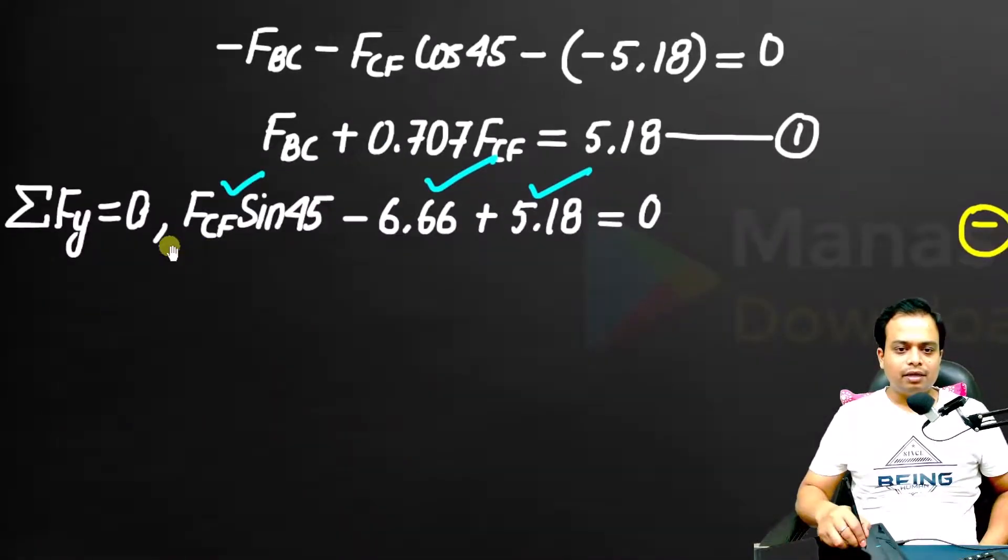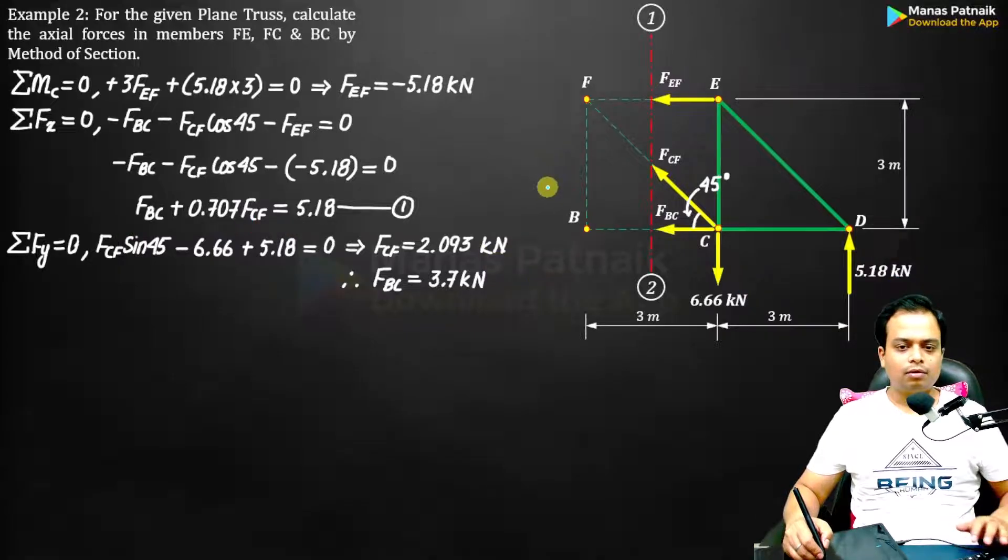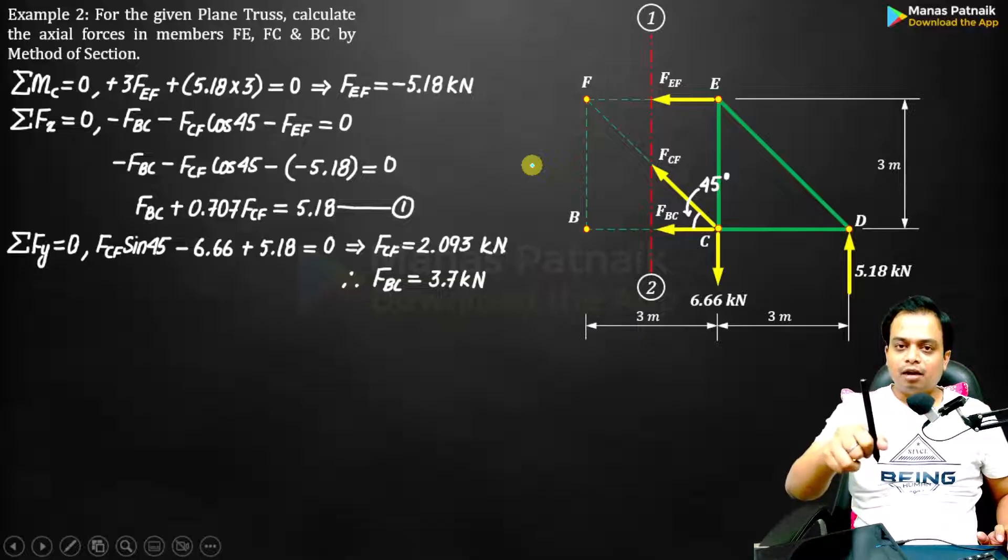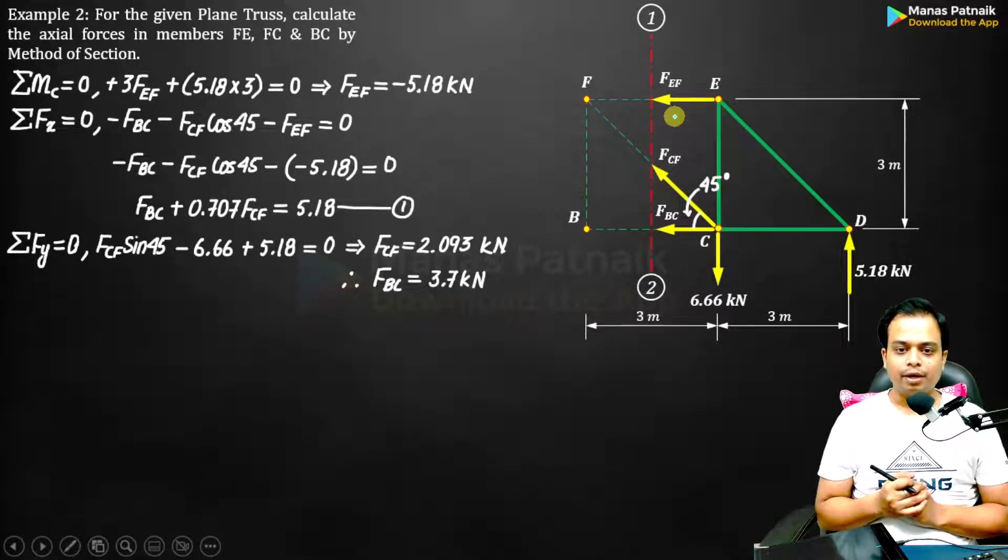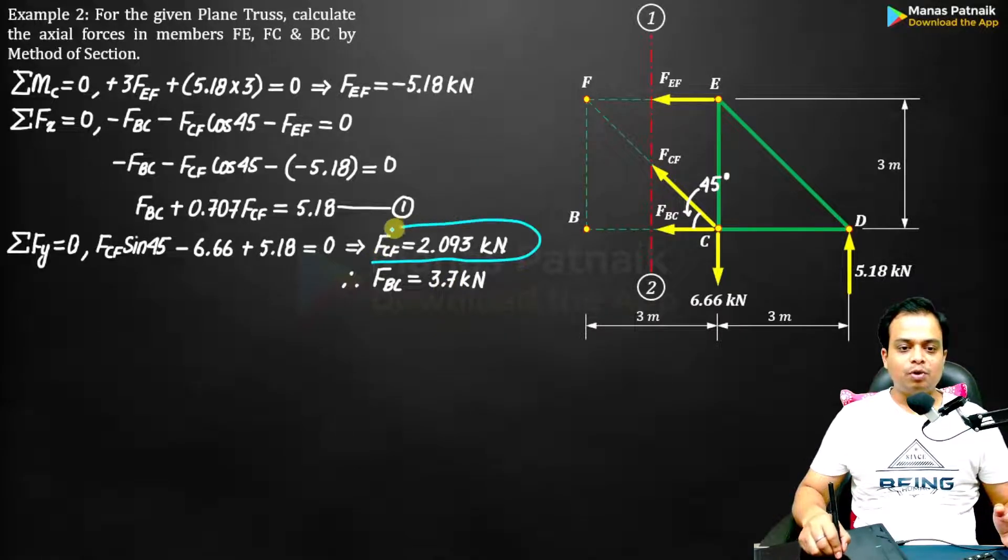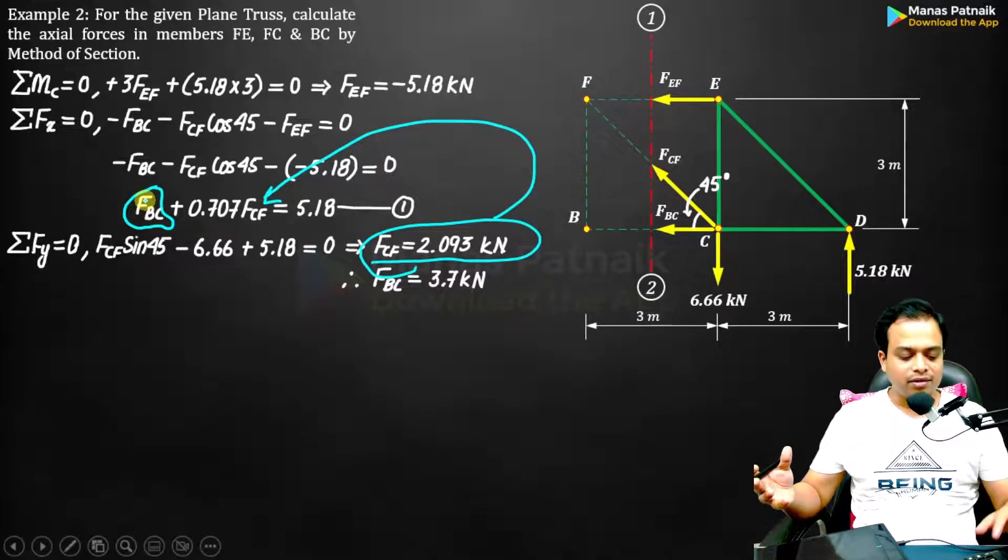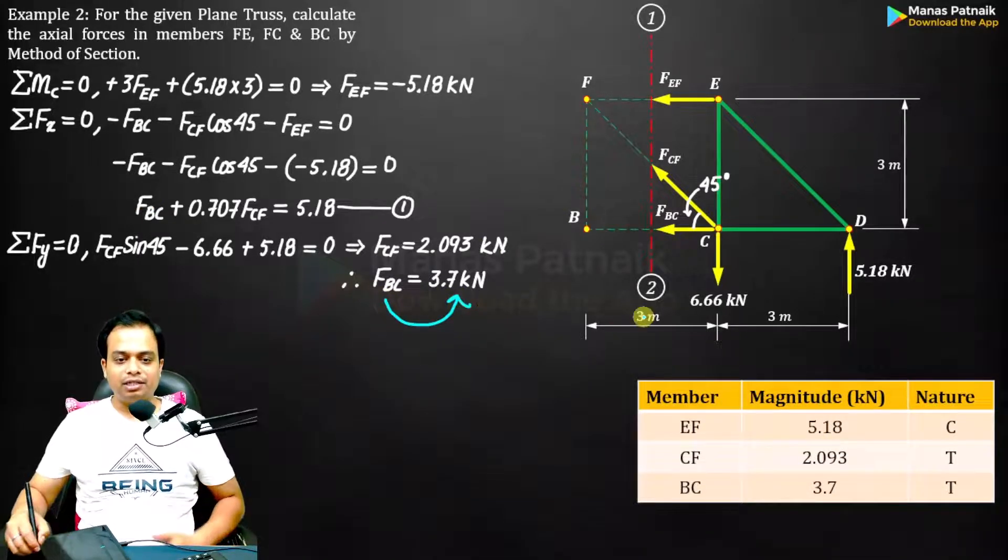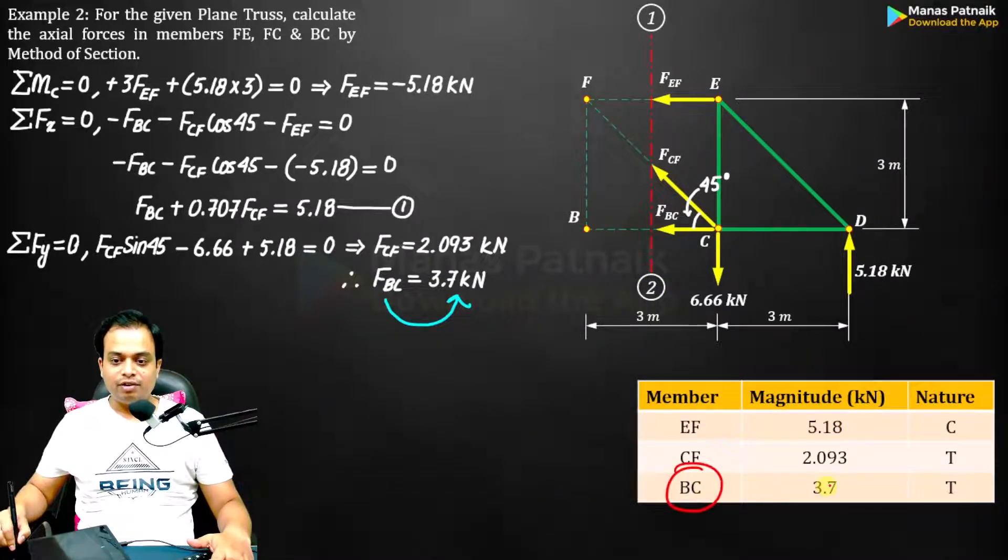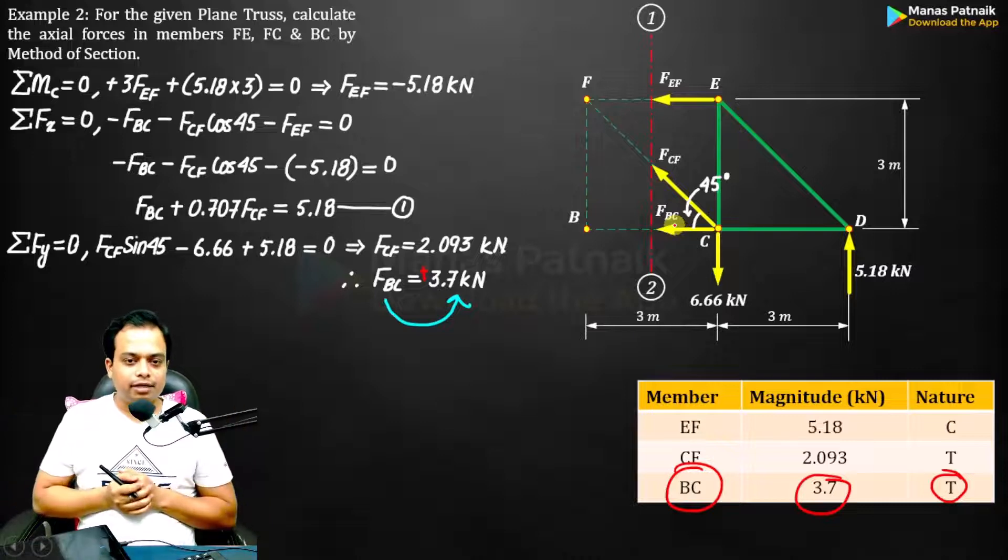Let me erase all the stuff. By the way, you will be getting all the notes inside the application. The PDF will be made available to you in HD quality, you can zoom in as much as you want. So here we are, once you get the value of FCF as 2.093, you can punch in that value into equation 1 and calculate the value of FBC. Isn't it lovely? Finally we are going to prepare the chart. As you can see, the value of FBC obtained is 3.7, so in the magnitude column write 3.7, and since it has worked out as positive, I'll put a T which indicates that member BC is under tension. Similarly you can put all of the remaining members and write their corresponding magnitudes and nature.